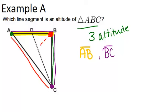It would be something like this. But the important thing to remember is that DC is not an altitude. So the altitudes that we can see in this triangle are AB and BC. Let's go to example B.